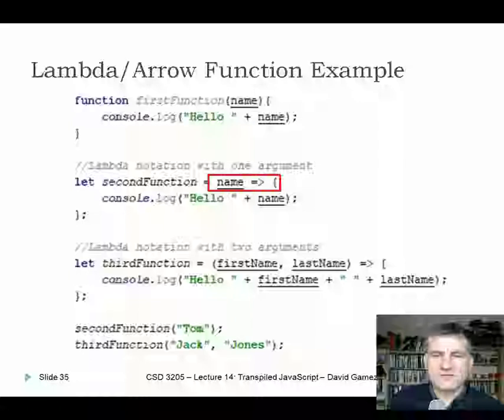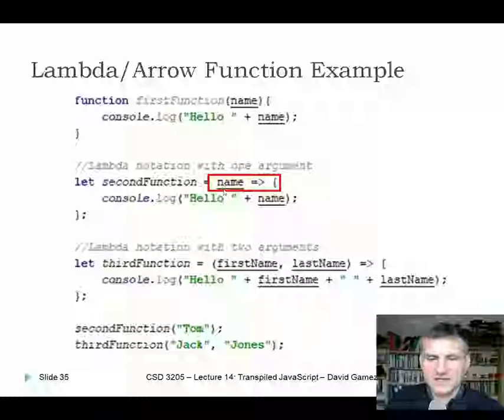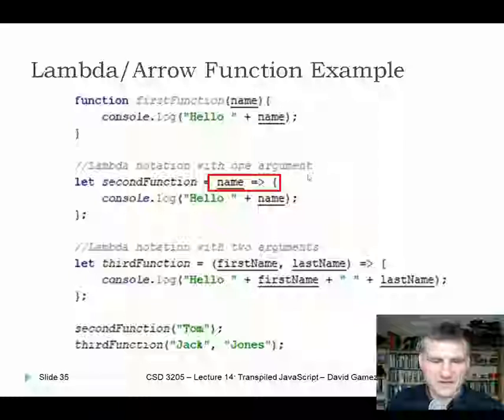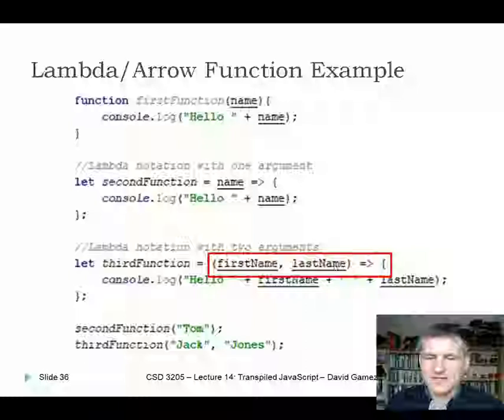Beyond the minor syntax sugar, the real benefit of lambda functions is that there's no this associated with them. With standard functions declared using the function keyword, every function gets its own this scope. So this.age++ inside a nested function refers to that inner function's this — not the outer function's — which can cause frustrating bugs where properties appear undefined.